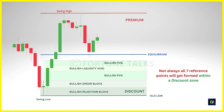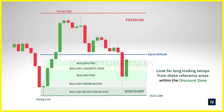Another point to note is that not all these reference points will get formed within a discount zone. There might be occasions where you might get only a bullish order block and a bullish fair value gap. So the idea is not to force yourself into finding these reference zones — if it is there, it will be visible to you; if it is not there, don't go searching for a ghost that does not exist. Once price trades below equilibrium and if the overall narrative is bullish, it sets up buy conditions. You can look for long trading setups from these reference areas within the discount zone, as it increases the probability of a successful trade. These reference areas are where buyers might step in to drive prices up from these discounted levels, identified when the price returns to discounted conditions allowing you to buy at favorable prices.